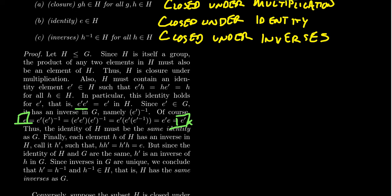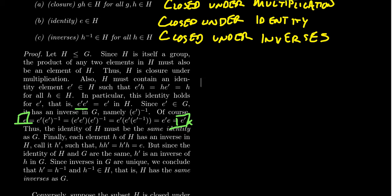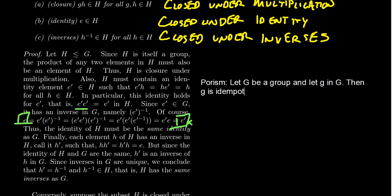What we've basically shown here is often referred to in the literature as a porism — a theorem proved while proving something else. So this is our porism: let G be a group and let g be a member of G. Then g is idempotent if and only if g is the identity. A group has only one idempotent element, and that is the identity itself. The identity is clearly idempotent, but we've now shown that any idempotent element must be the identity.